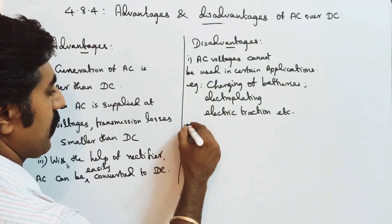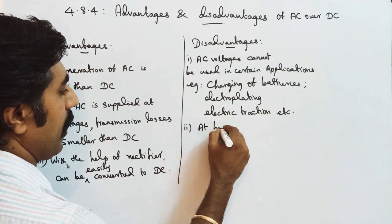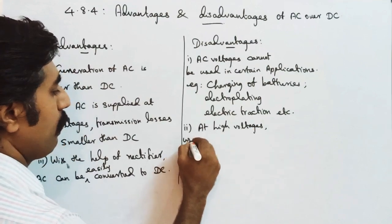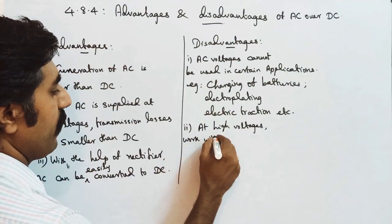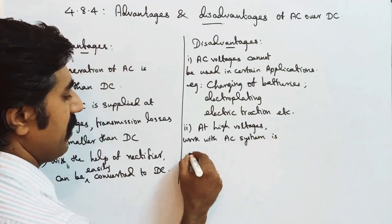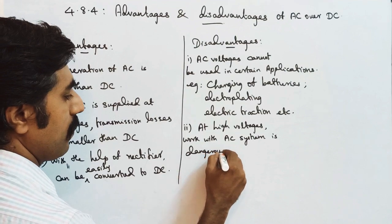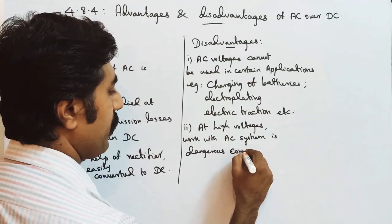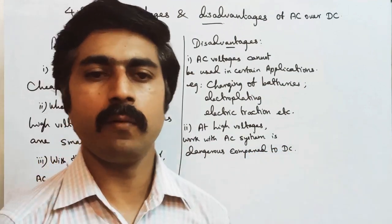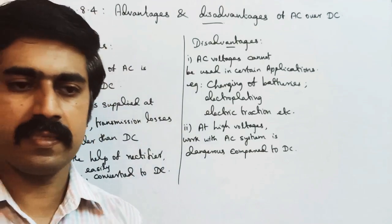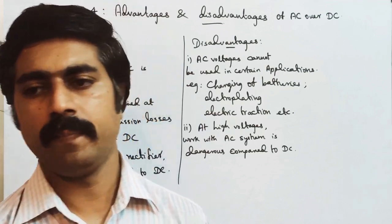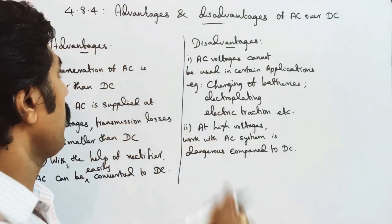The second disadvantage: at high voltages, the AC system is more dangerous compared to DC. High voltage AC carries a higher risk than DC.